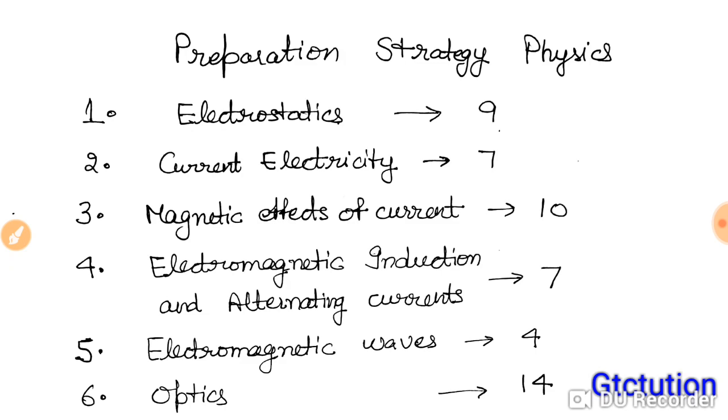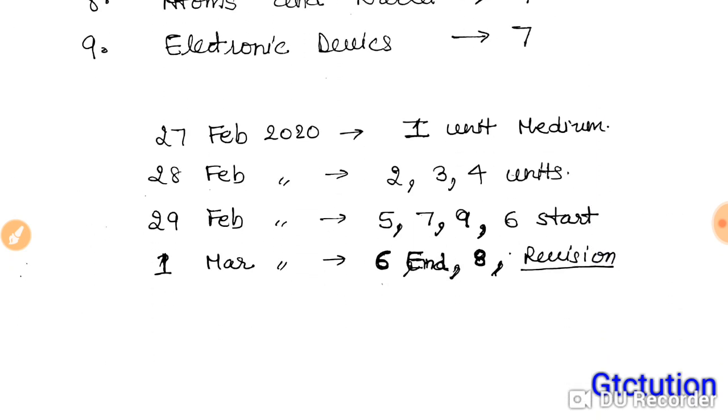As you know, there is a paper on physics 2nd March. Today is 27th February. If you have three days complete, today is already released, but I am going to use it for half day. You have got three and a half days for preparation.